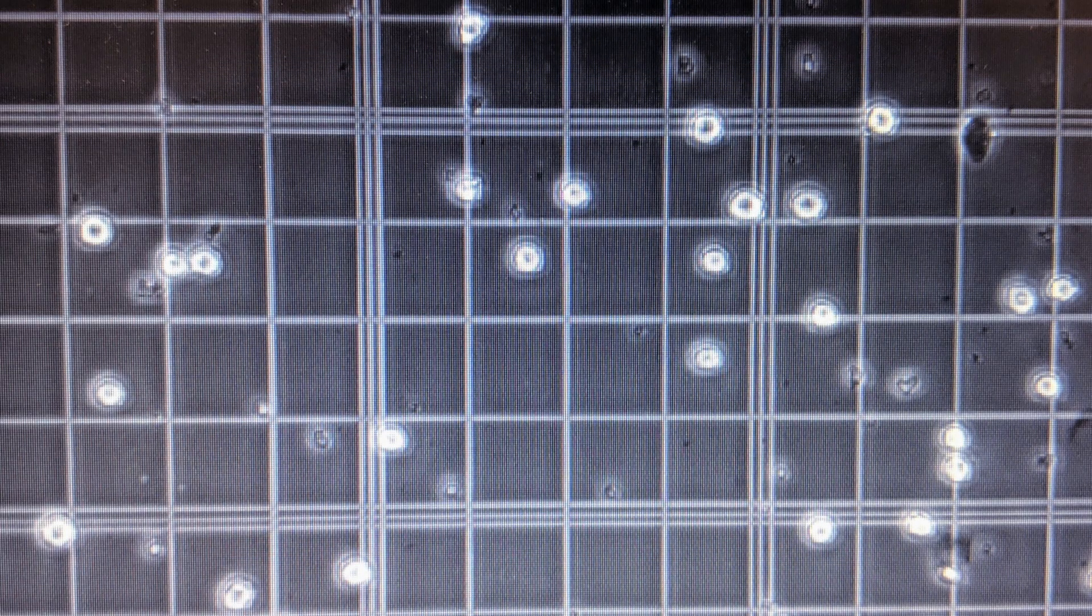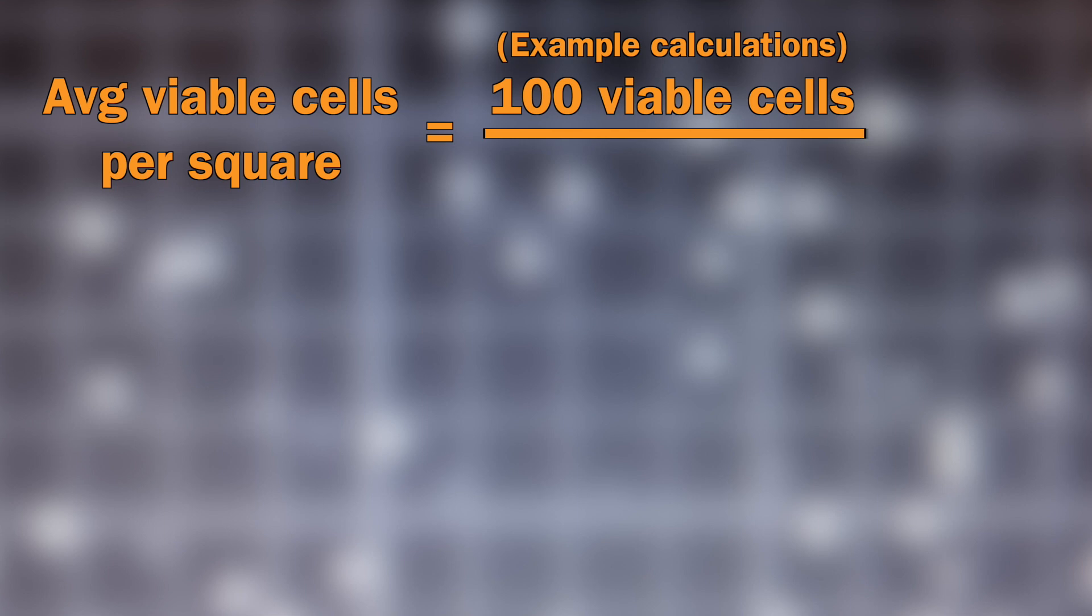Once you've finished counting cells in the desired number of squares, calculate the average number of viable cells per square by dividing the total number of viable cells by the total number of squares counted.